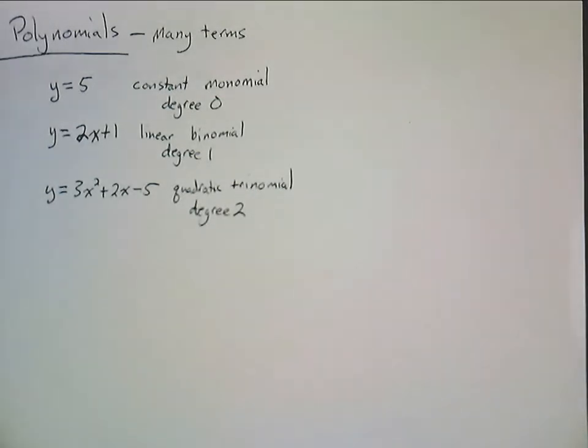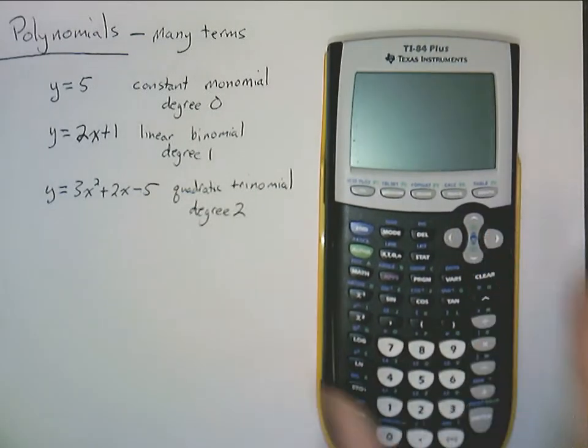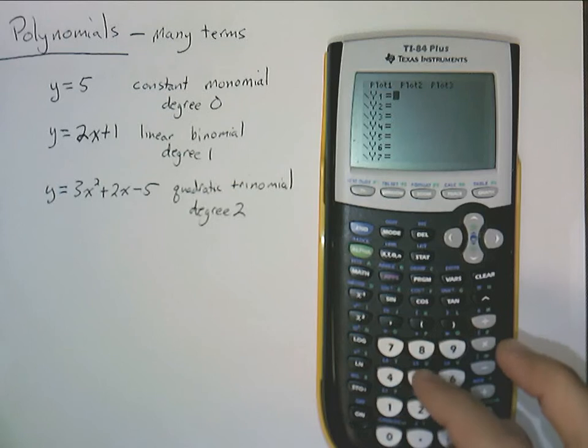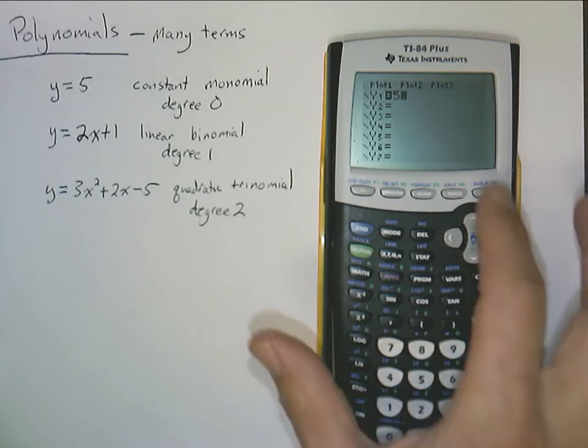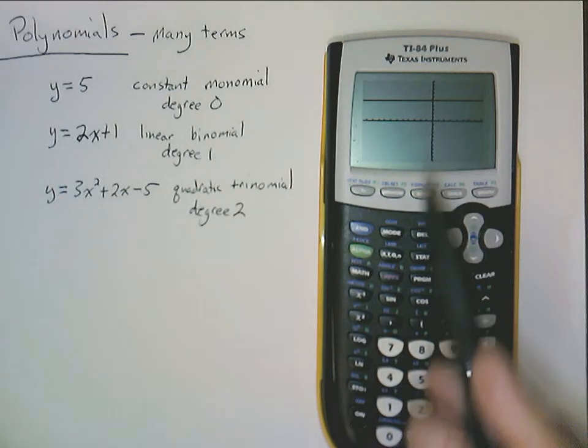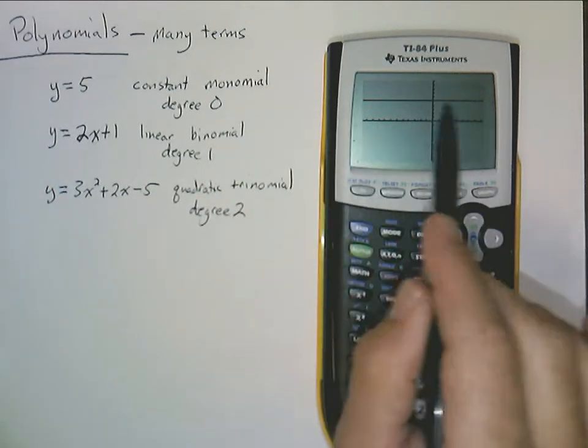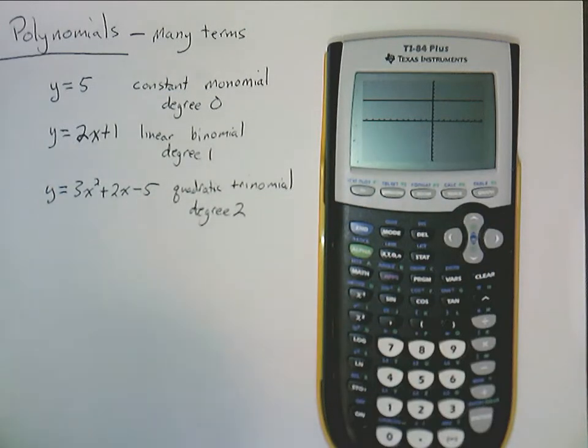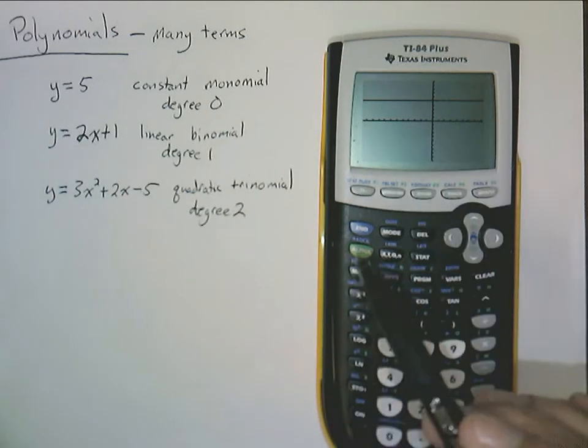And before we move on, let's just look at what these things really look like a little bit. And so we can do that on a calculator here. So if we just want to graph these, so a constant, let's say y equals 5. Graph that, and there we go, we see just a horizontal line. And that's a constant function. The y is always constant, staying the same.